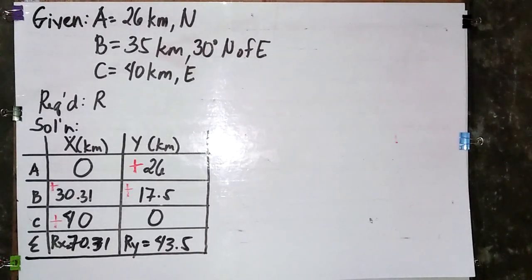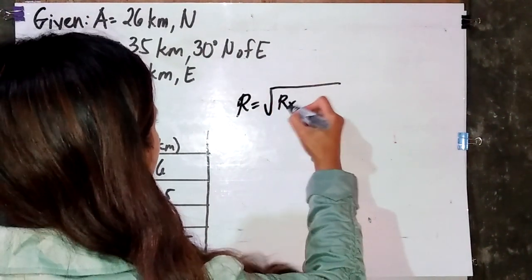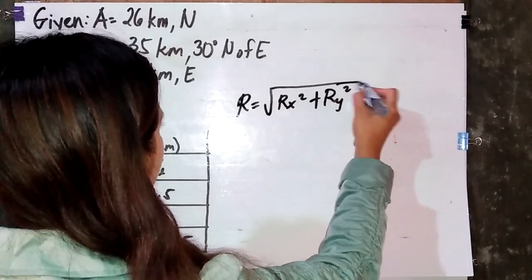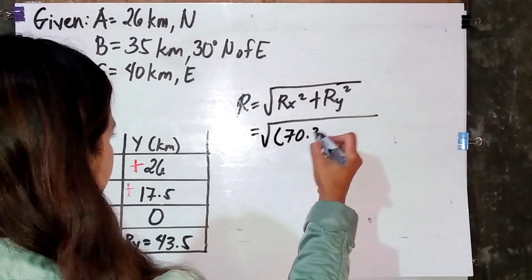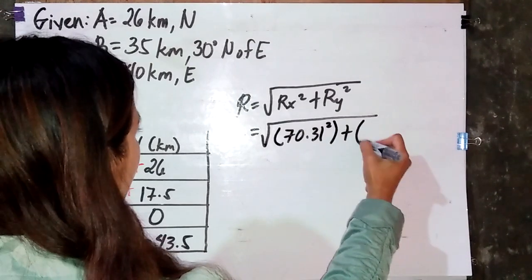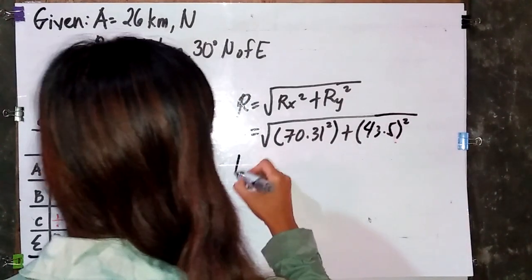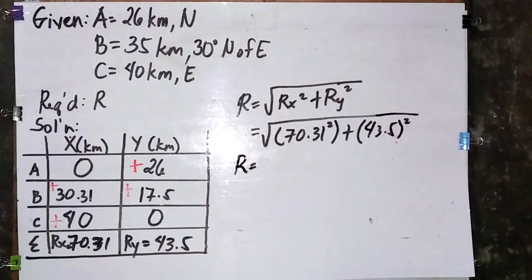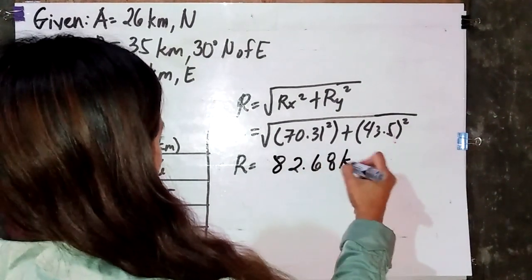After getting the summation of Rx and Ry, we can now solve for our resultant using the Pythagorean theorem. R equals square root of Rx squared plus Ry squared. Substituting: square root of 70.31 squared plus 43.5 squared. We get a resultant of 82.68 kilometers.